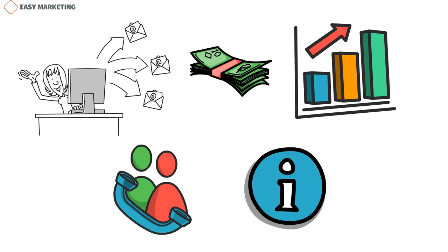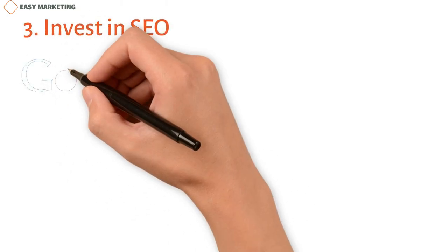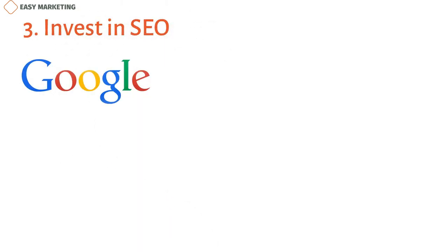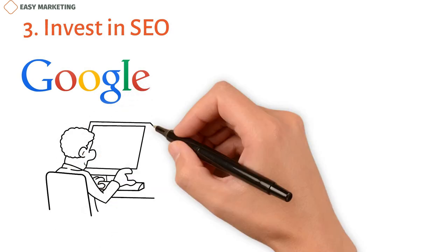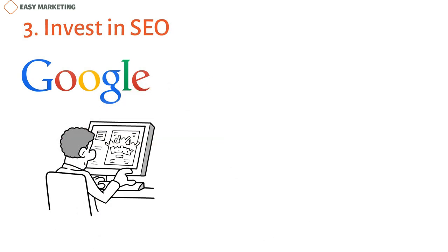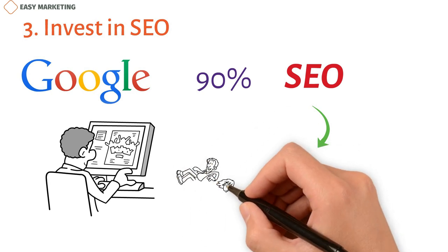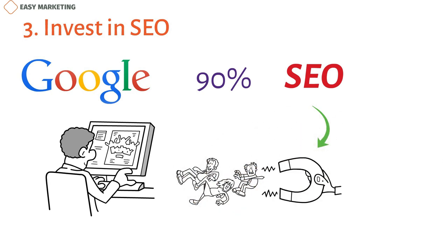Invest in SEO: Even Google admits that there are many ways to buy something. But one thing that many people do in the beginning is look online. Nearly 90% of sales start online and most marketers think SEO is one of the top five ways to get people to your site. If you don't show up in search engines, you're missing out on a lot of possible leads.